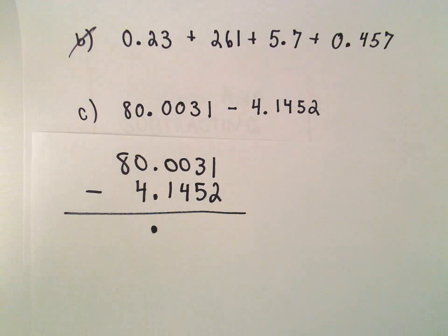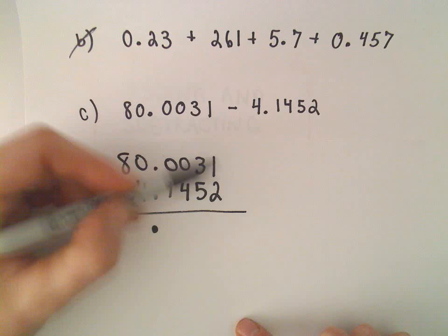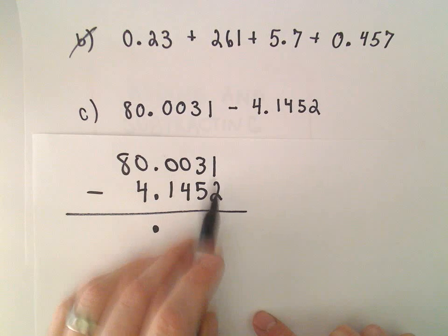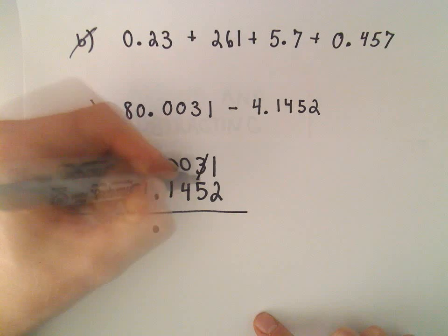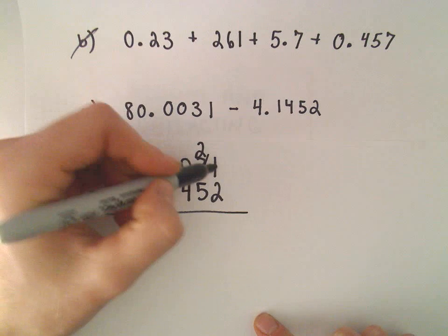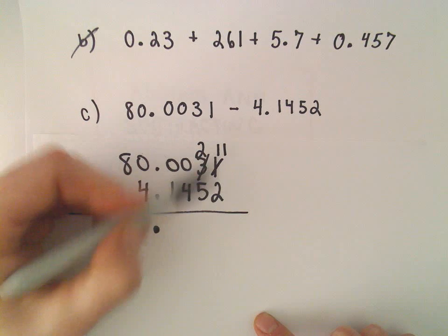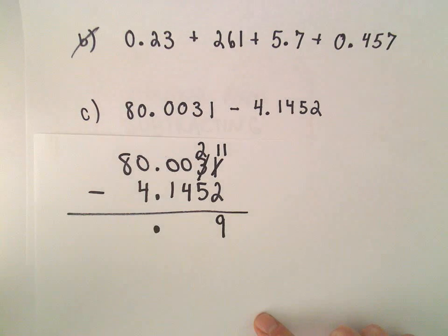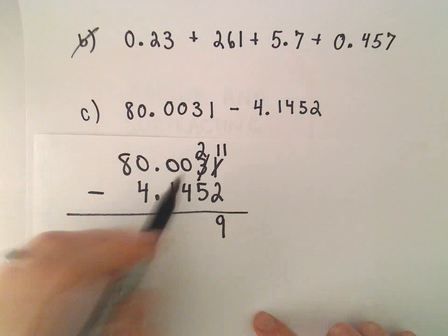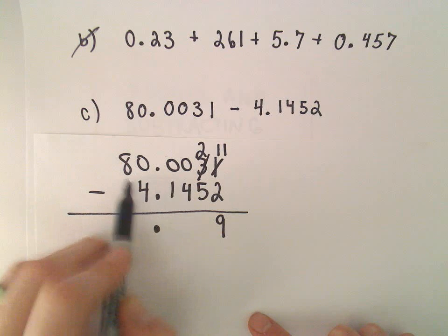So I want to do 1 minus 2. Well, I can't take 2 away from 1. So we'll turn our 3 into a 2, carry a digit over, and make our 1 into 11. So 11 minus 2 is 9. Now, 2 minus 5 — we can't do that either. I'd like to carry a digit, but notice they're all 0, 0, 0.